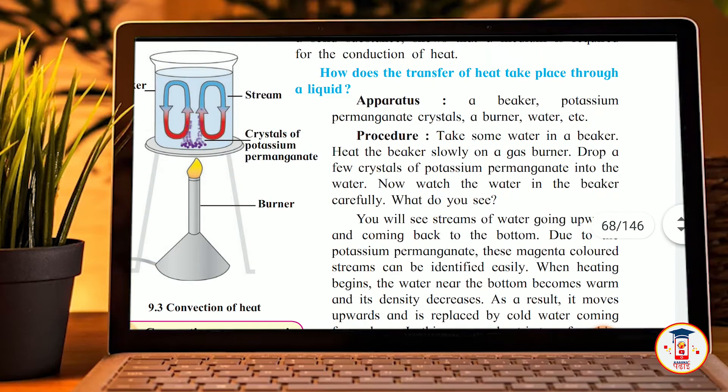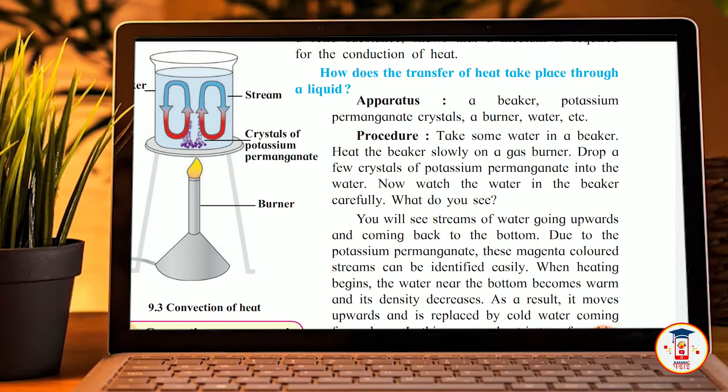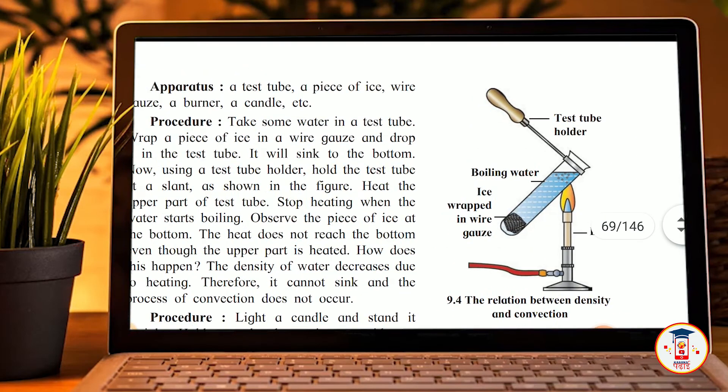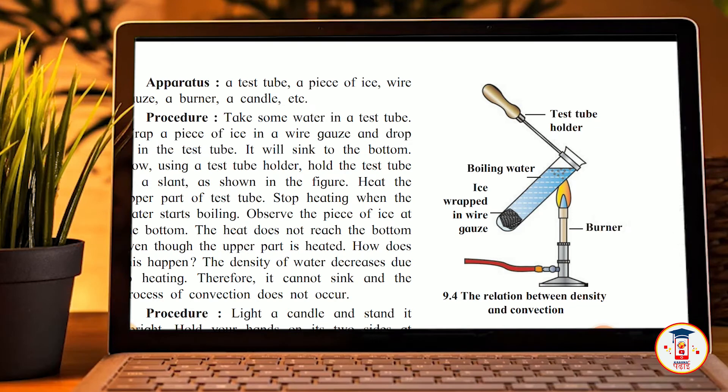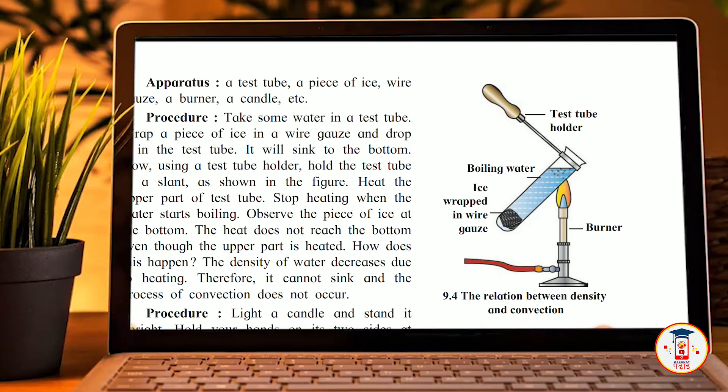When we put crystals of potassium permanganate into the water, then the activity is possible. If there is potassium permanganate, the colored streams will be visible in the water. So please remember that the potassium permanganate crystals are important. Now we will see the next activity, the relationship between density and convection. We have learned about the relationship between density and convection, but how does it work with water?